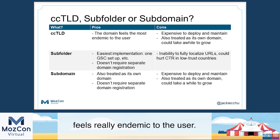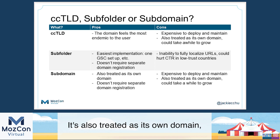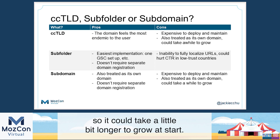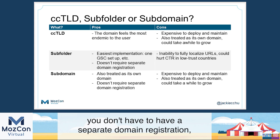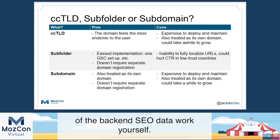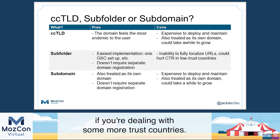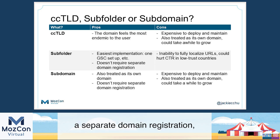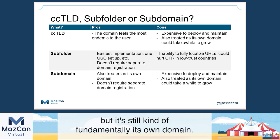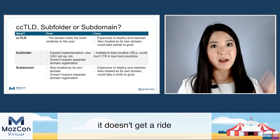There are pros and cons to each. The pros of a CCTLD: it feels really endemic to the user. The cons: it's its own site, expensive to deploy and maintain, and treated as its own domain — you don't get the consolidated link equity benefit, so it could take longer to grow. A subfolder is honestly the easiest implementation — you only have one Search Console account to set up, no separate domain registration, and you can do a lot of the back-end SEO data work yourself. The downside is you don't have full ability to localize URLs. A subdomain is treated much like a CCTLD — it doesn't require a separate domain registration, but it's expensive to deploy and maintain and Google treats it as its own site.